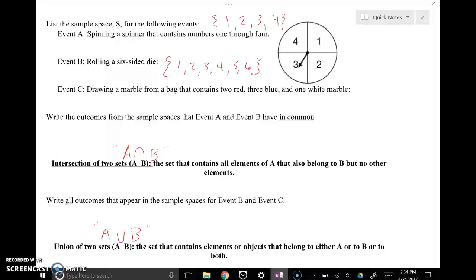Drawing a marble from a bag that contains two red, two blue, and one white marble. So that would be red, red, blue, blue, and white. Those would be the sample spaces for those three events.